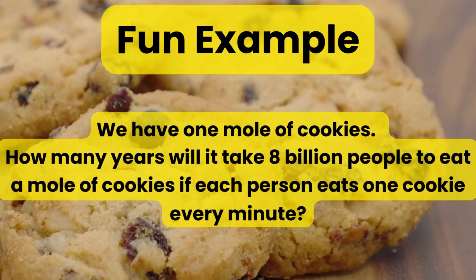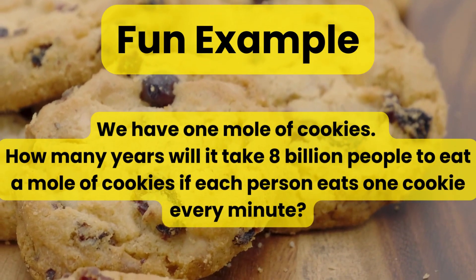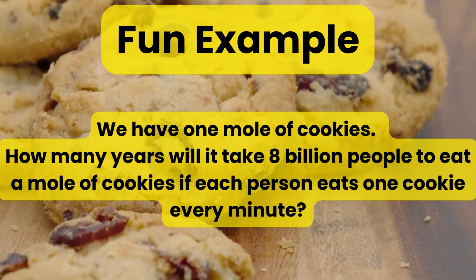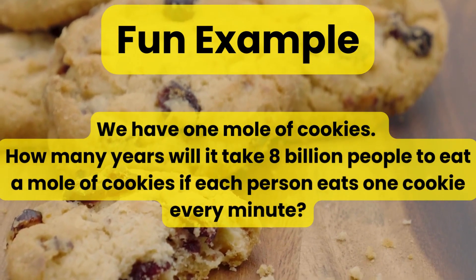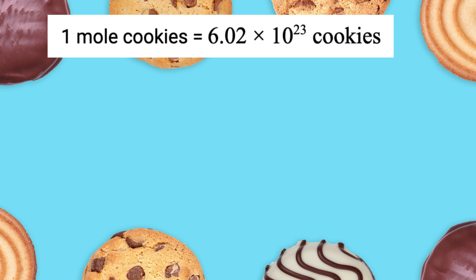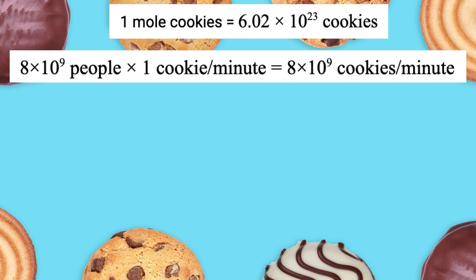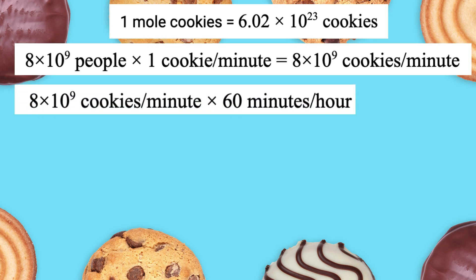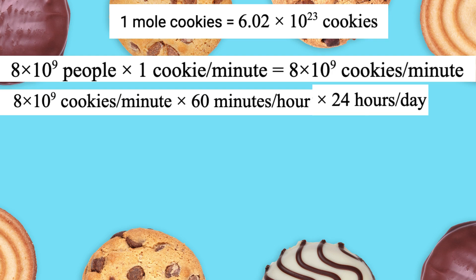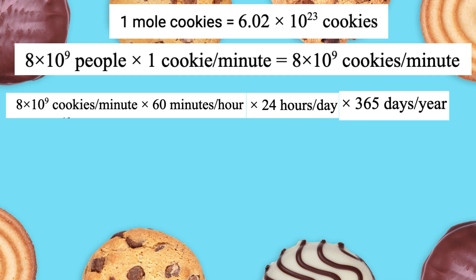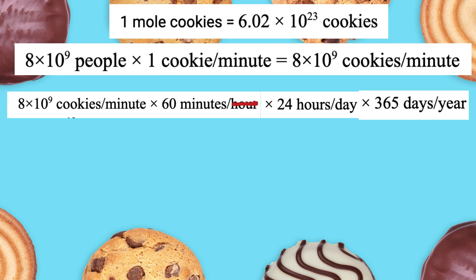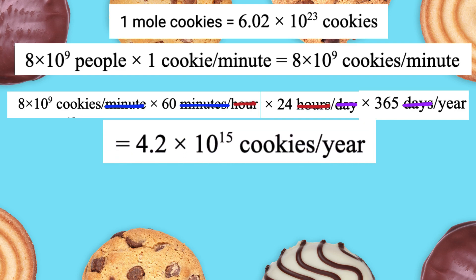Fun example: imagine we have one mole of cookies. How many years will it take 8 billion people to eat a mole of cookies if each person eats one cookie per minute? One mole of cookies is 6.02 times 10 to the 23 cookies. Eight billion people eat one cookie per minute, so that is 8 billion cookies per minute consumed. Converting to hours: multiply by 60 minutes per hour. Converting to days: multiply by 24 hours per day. Converting to years: multiply by 365 days per year, and you get 4.2 times 10 to the 15 cookies per year consumed.